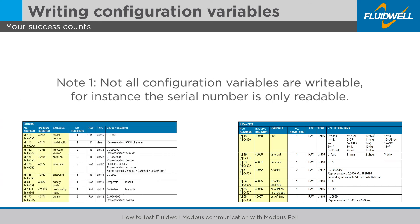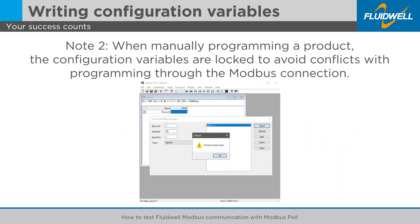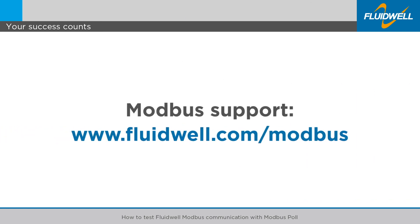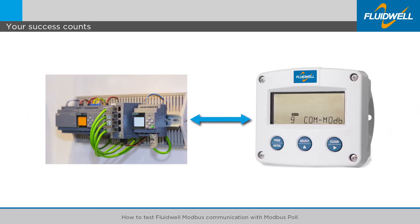Not all configuration variables are writable. For instance, the serial number is only readable. When manually programming a product, the configuration variables are locked to avoid conflicts with programming through the Modbus connection. Check fluidwell.com/Modbus for additional info, manuals and tips for troubleshooting. Our goal is your flawless working application.